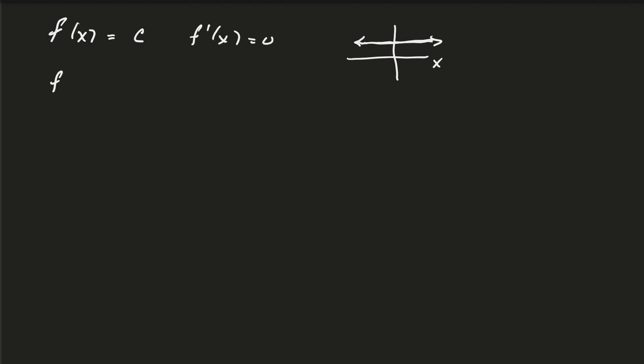Similarly, if f(x) is a line, mx plus b, then the derivative is just equal to the slope, because that's our rate of change.